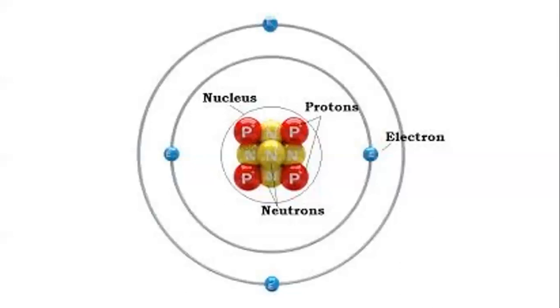Ions are positively charged if the protons outnumber the electrons, and they are negatively charged if the electrons outnumber the protons.